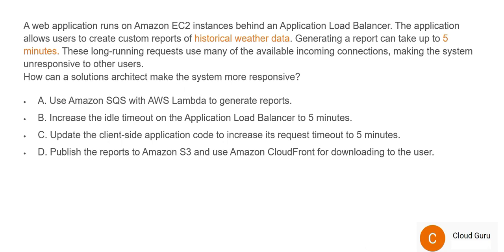Option A looks correct because it uses SQS to collect requests in the queue — so long-running queries won't block other users — and uses AWS Lambda, a serverless architecture, to generate the reports. As many Lambda instances as needed can run in parallel, so the problem of users getting no response will be eliminated. Option A looks correct. Let's see option B: increase the ALB idle timeout to 5 minutes. Setting this to 5 minutes will not help — the problem is not at the load balancer level. So B is wrong.